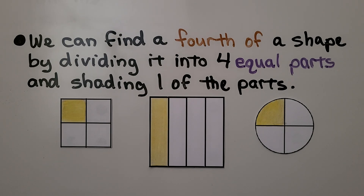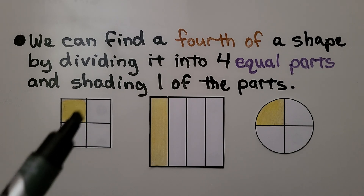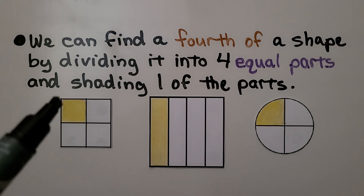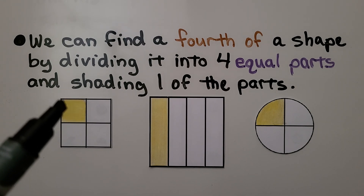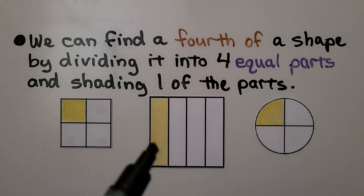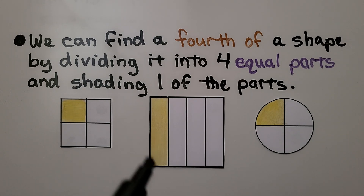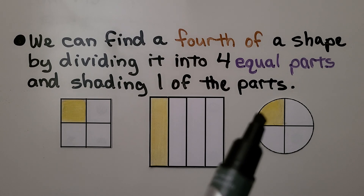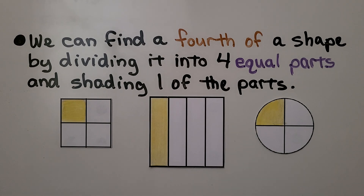We can find a fourth of a shape by dividing it into four equal parts and shading one of the parts. This is one fourth of the square. This is one fourth of this square. This is one fourth of the circle.